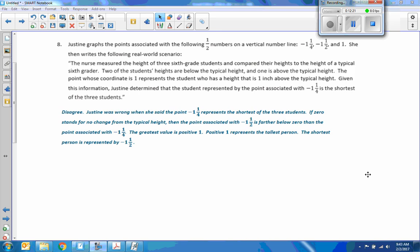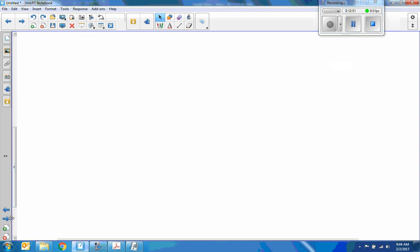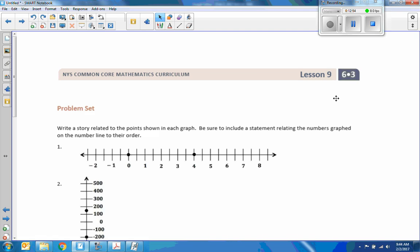I disagree. Justin was wrong when she said the point negative one and a quarter represents the shortest of the three students. If zero stands for no change from the typical height, then the point associated with negative one and a half is further below zero than the points associated with negative one and a quarter. The greater value is positive one. Positive one represents the tallest person. The shortest person is represented by negative one and a half, not negative one and a quarter. That's Justin's.